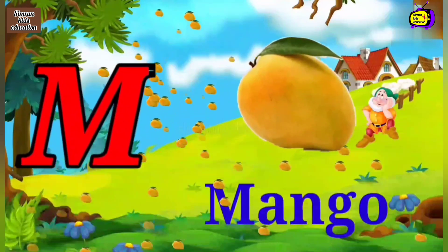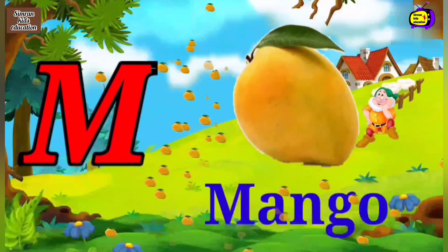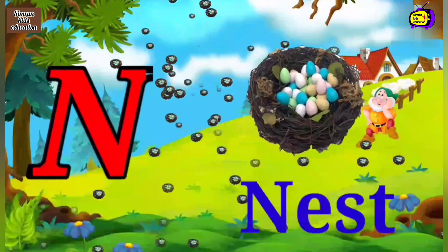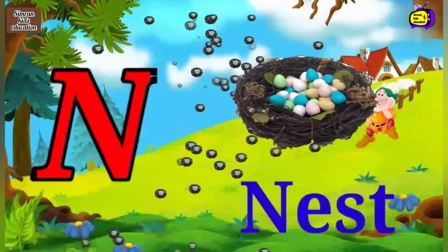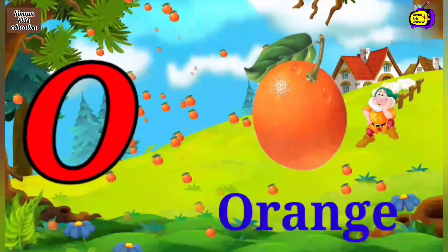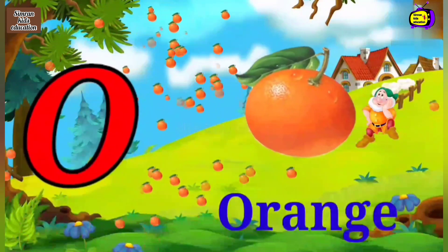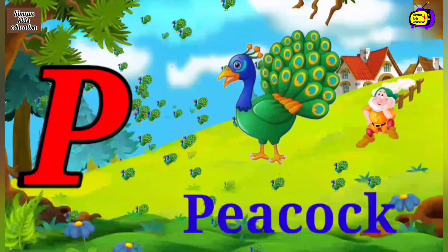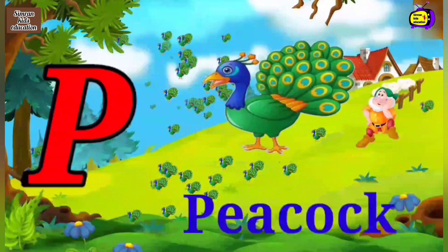M for Mango, Mango means aam. N for Nest, Nest means ghosla. O for Orange, Orange means santara. P for Peacock, Peacock means more.